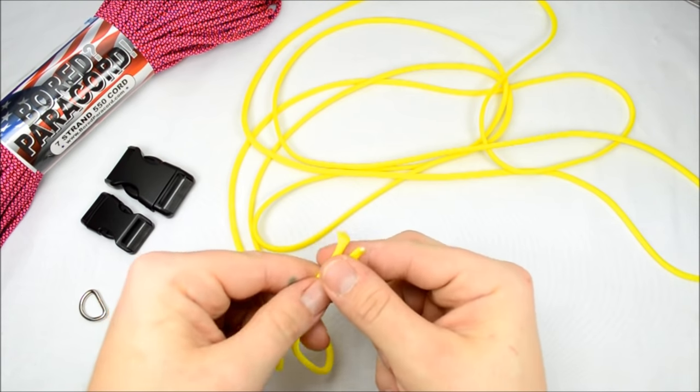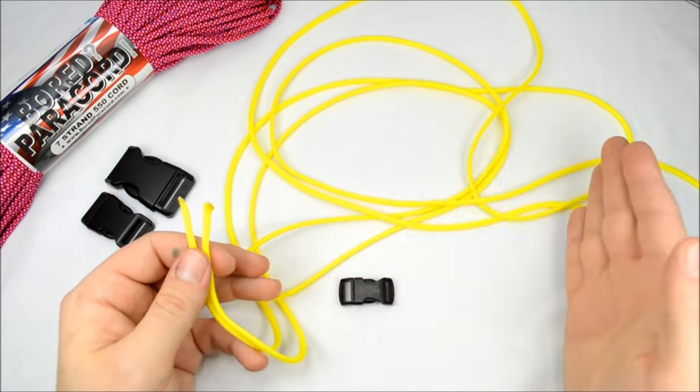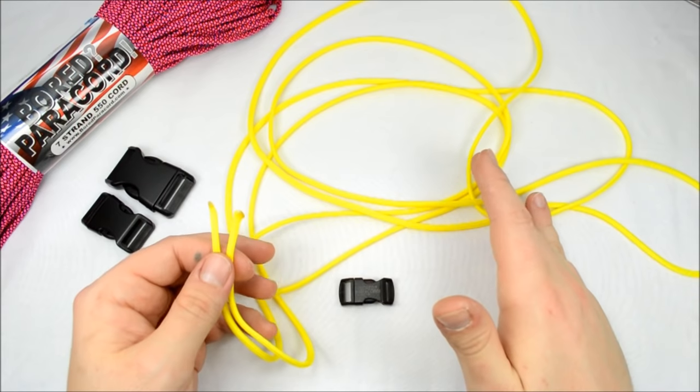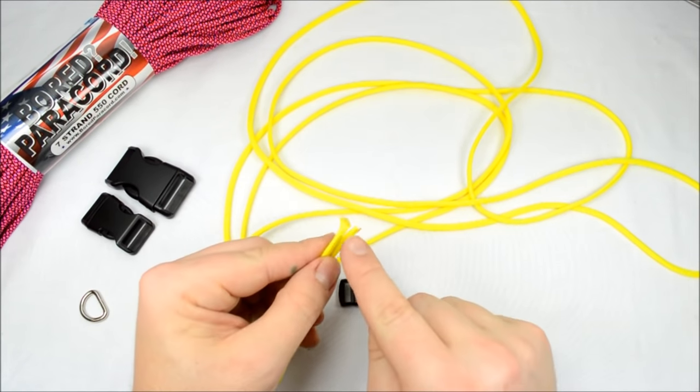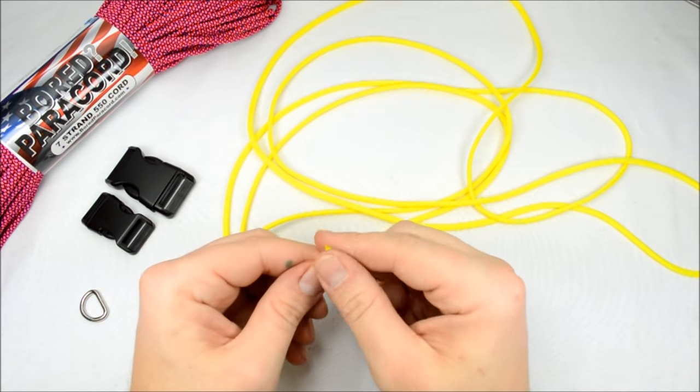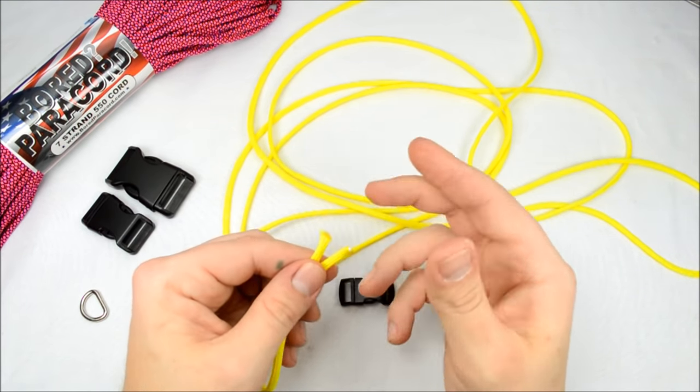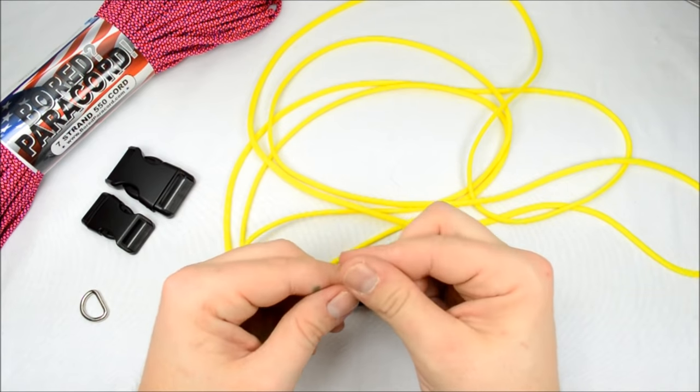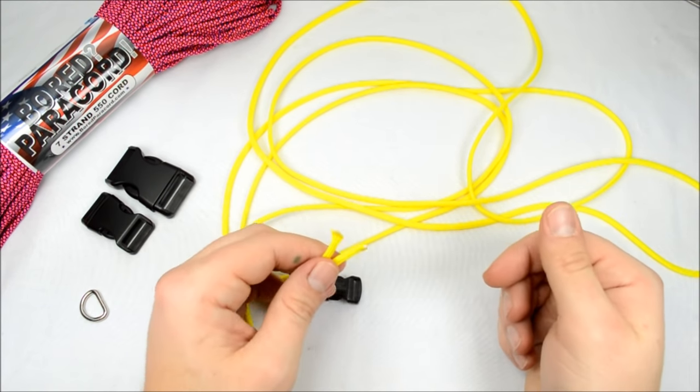So the first thing I want to do, I have about 10 feet of neon yellow here. And all I'm doing here is I've flattened both ends with a little bit of heat from the lighter and then a pair of needle nose pliers. Just clamp those down, flatten the end so they fit through the buckle real nice.